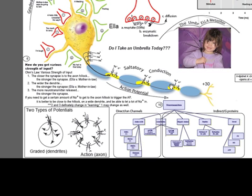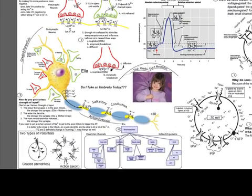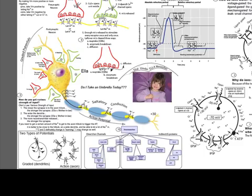The next sodium channel senses that voltage change and opens. The inactivation plug not only closes the sodium channel but keeps it closed, ensuring the action potential travels in only one direction — this is called saltatory conduction. The inactivation plug prevents the action potential from backing up the axon, because even though sodium might flow back to the previous node of Ranvier, the sodium channels there are already inactivated. This keeps the action potential going in one direction.